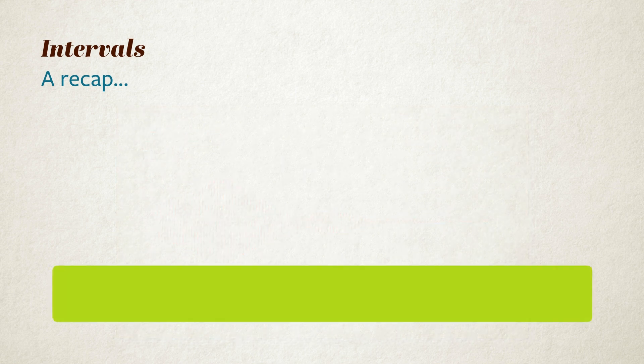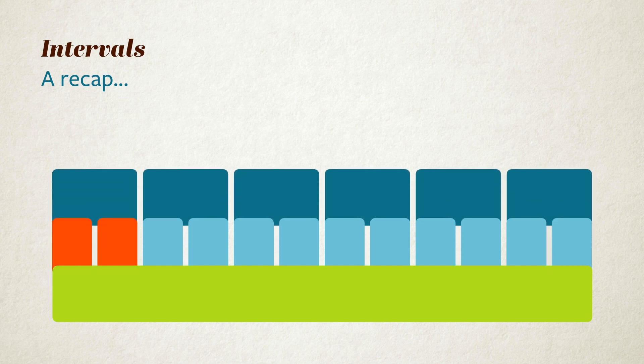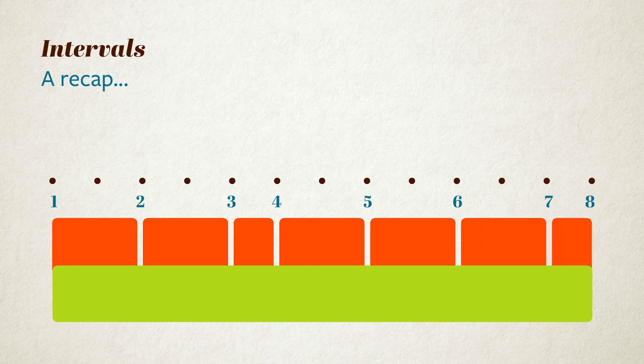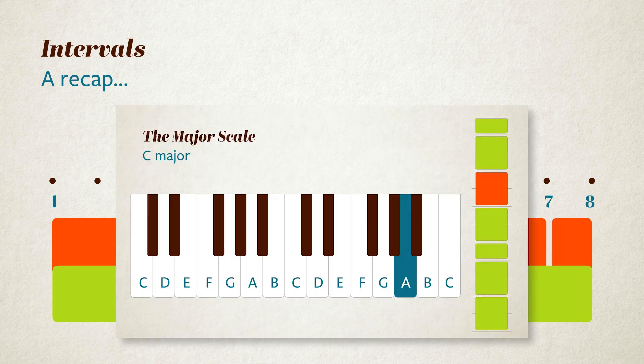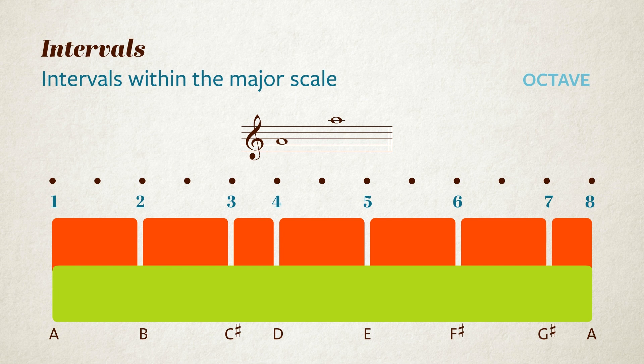You'll recall that dividing the octave into 12 equal parts gives us semitones, the smallest intervals that we normally use. And two semitones make a tone. Now a major scale is made up of a combination of these tone and semitone intervals. Here's a scale of A major, and this is the octave that it spans, A to A.